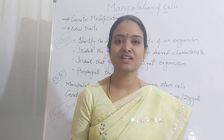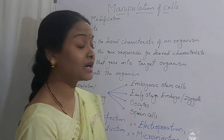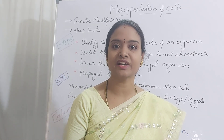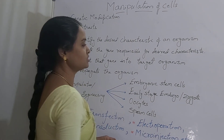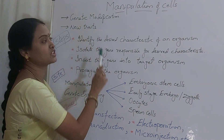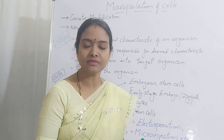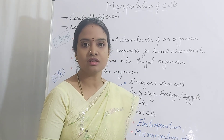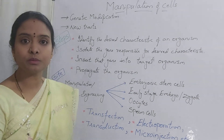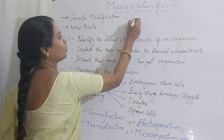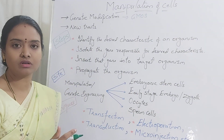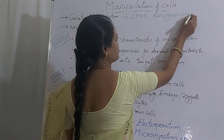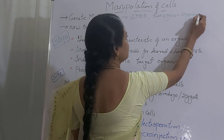Good morning students, welcome to Leela's Studio. Today we'll discuss manipulation of cells — manipulation is nothing but genetically engineering or genetically modifying the cell. Genetic modification means you are modifying the genome of an organism either by adding a gene, changing a gene, or deleting a gene. By means of genetic modification you can produce genetically modified organisms, also called transgenic organisms.